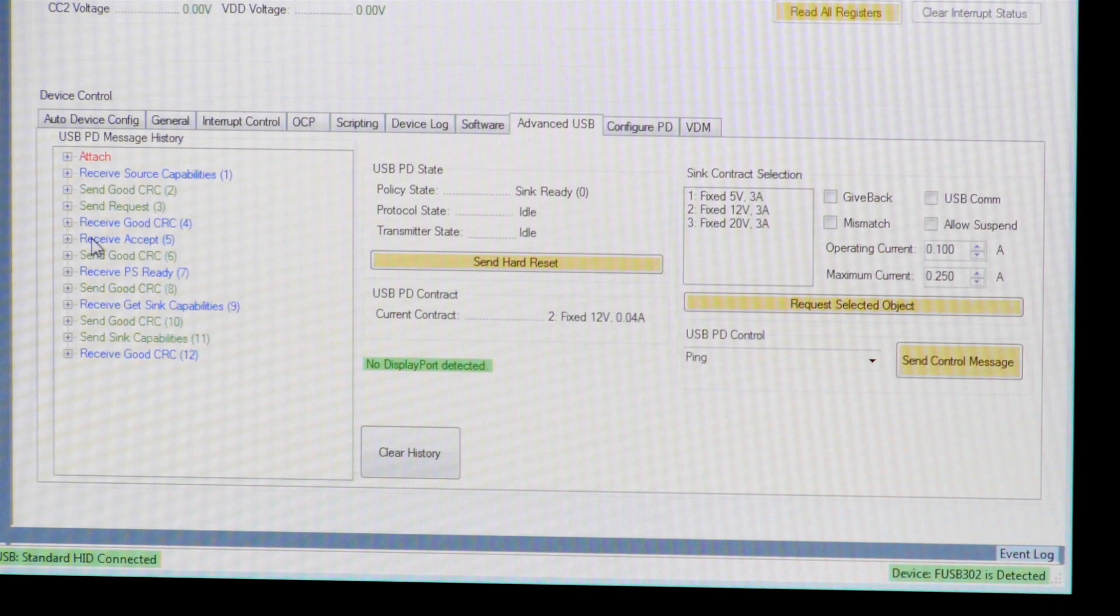The source then can either accept or reject that request. It accepted the request. At that point, it ramps the power supply to the new voltage and indicates to the sink when it is ready by sending a PSReady message. We are now operating at a 12-volt contract.